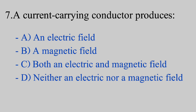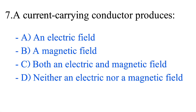Question number 7. A current carrying conductor produces: option A, an electric field; option B, a magnetic field; option C, both an electric and magnetic field; option D, neither an electric nor a magnetic field. The correct answer is option B, a magnetic field.